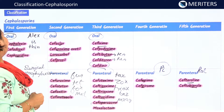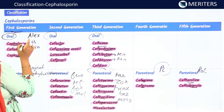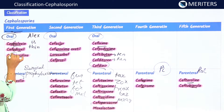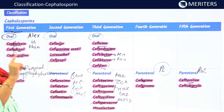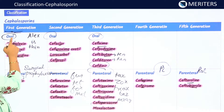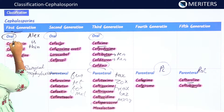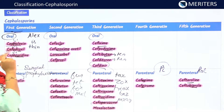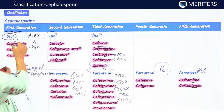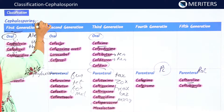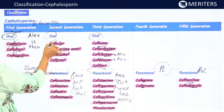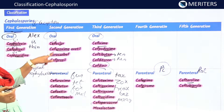To identify generations in exams: first generation drugs will mostly start with 'cefa-' or 'cepha-' — the letter 'a' is the clue. However, remember there is one exception: cefaclor, which is a second generation cephalosporin despite starting with 'cefa-'.